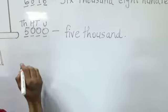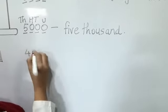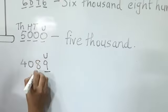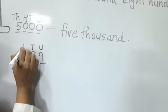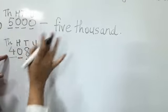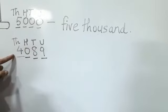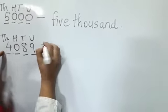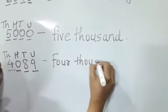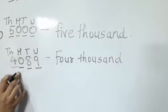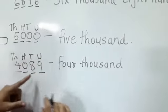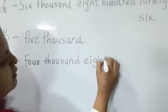One more example — 4089. On the unit place it is 9, on the tens place it is 8, on the hundreds place it is zero, and on the thousands place it is 4. Whenever there is a zero on the hundreds place, you don't write anything there — you just look directly at the tens and unit place. So we write: four thousand, eighty nine.